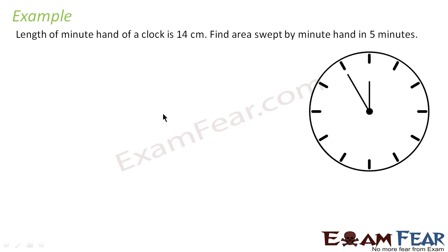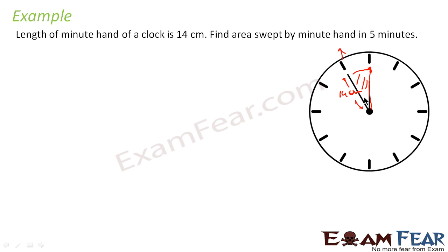The question is: the length of a minute hand of a clock is 14 centimeters. This minute hand is 14 cm — we are talking about the minute hand, not the hour hand. You have to find the area swept by the minute hand in 5 minutes, from this point to this point, because this is 5 minutes. You have to find this area, and we can see this is a sector — this is the radius and this is the arc.